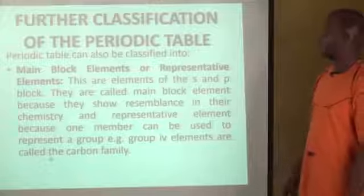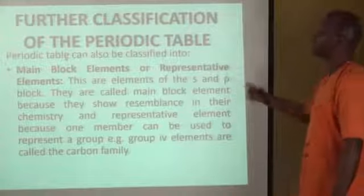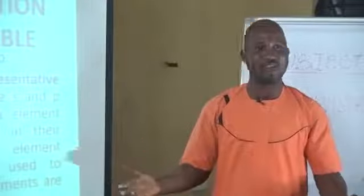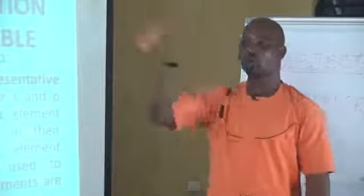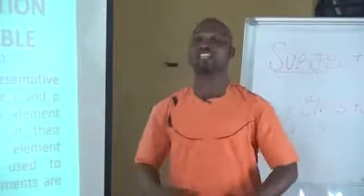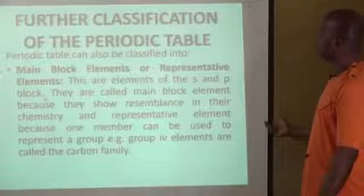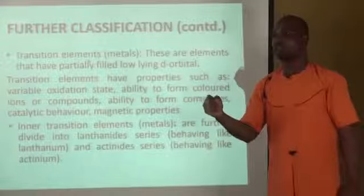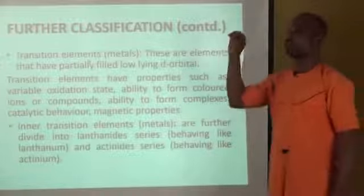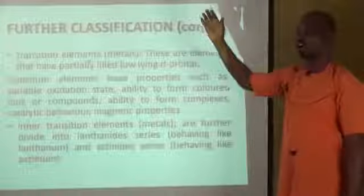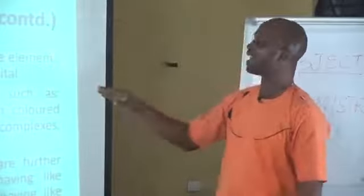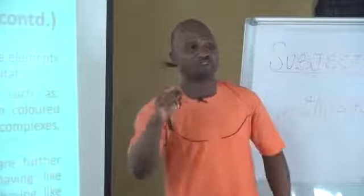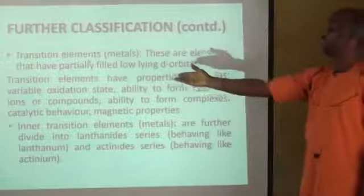We will look at further classification of the periodic table in terms of main block or representative elements. These are elements of the S and P blocks. They are called main block elements because they show resemblance in their chemistry, and representative elements because one element can represent the whole group — for instance, group 4 elements are called the carbon family. The transition elements are in between the S and the P blocks, also called the D block. Transition elements are defined as elements that have partially filled low-lying D orbitals.